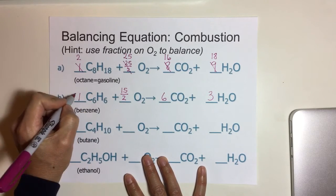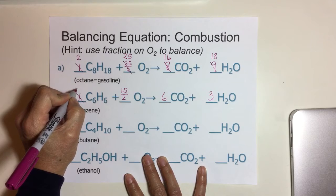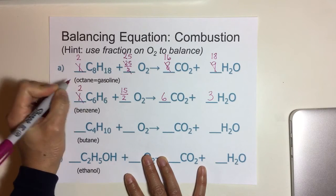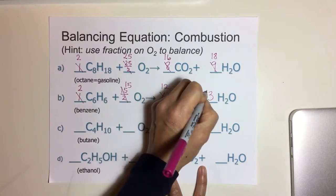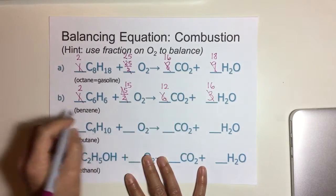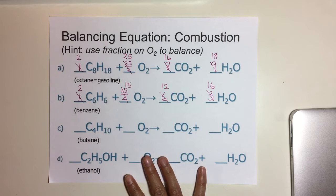Once again this equation has a fraction and we want to get rid of that fraction. So again there's a 1 here, so to get rid of it you multiply this whole equation by 2. This gives you 2, this gives you 15, 12, and 6. So if you check your atoms, it'll be balanced in terms of the carbon, oxygen, and hydrogen.